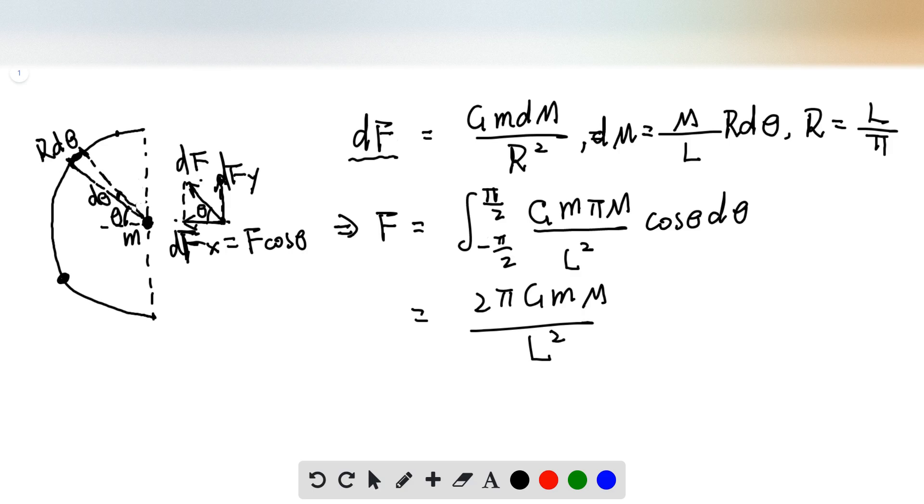So every point here, you can always find another point here, their y component can cancel, but they have the same x component, right? So the net force has only x component going to the left.